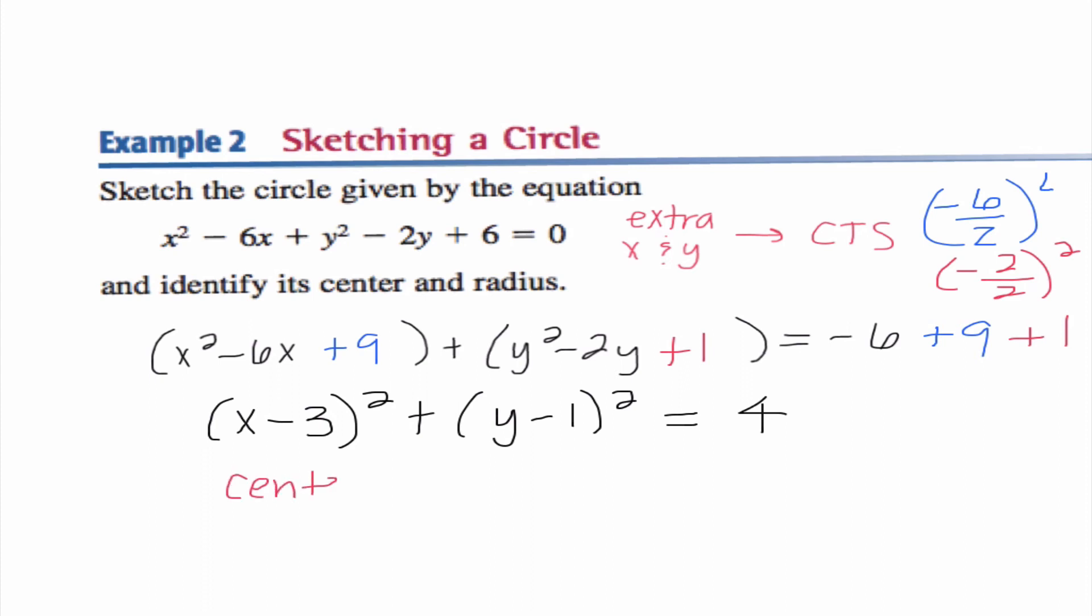So based on this, I can determine that the center of this circle is (3, 1). Notice in my x parenthesis, I'm taking the opposite of that number, and that is our x coordinate. In the y parenthesis, I'm taking the opposite of that number, and that is our y coordinate. Our radius is the square root of that constant, so our radius is 2.